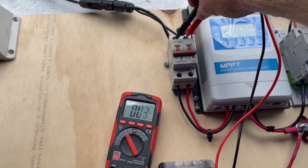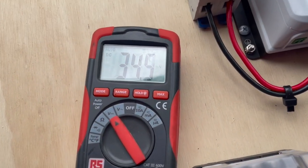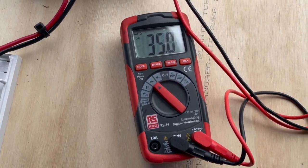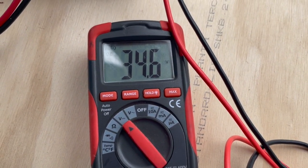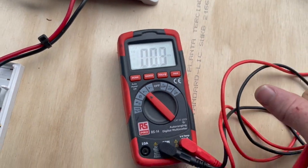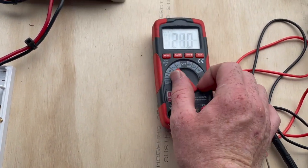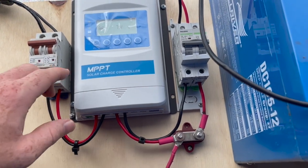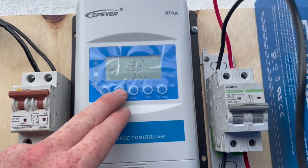We're just going to check what the open circuit voltage is: 34.5 volts. Okay, so we've got both of them on. They've had a minute or two to settle.